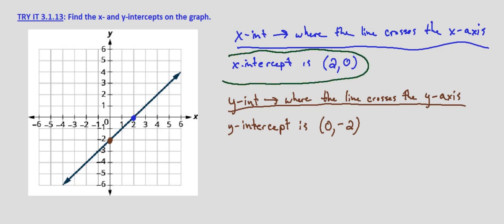So the x-intercept in this case is the point 2, 0, and the y-intercept where it crosses the y-axis is 0, negative 2.